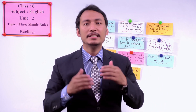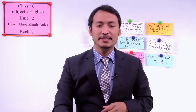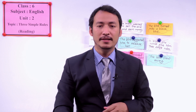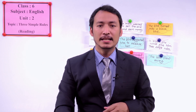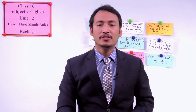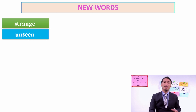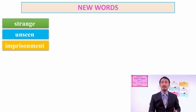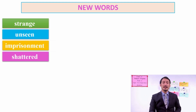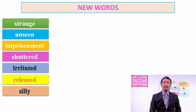This is the story about these three simple rules. We will find out those three simple rules in the text. Now, before going into the text, let's have a look at some words in detail. We see words like: strength, unseen, imprisonment, shattered, irritated, released, silly, and disappeared.